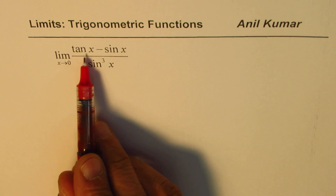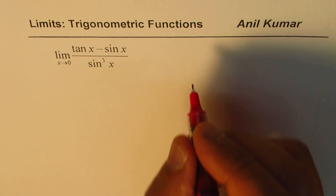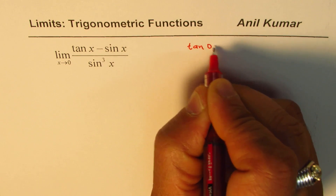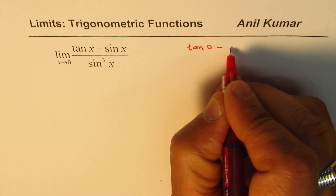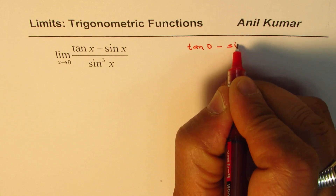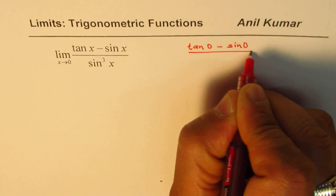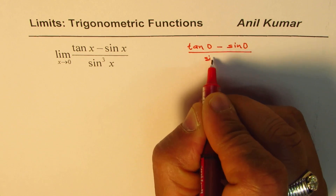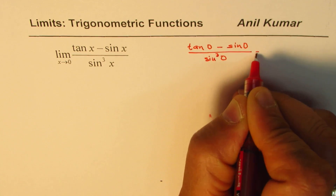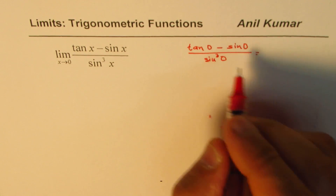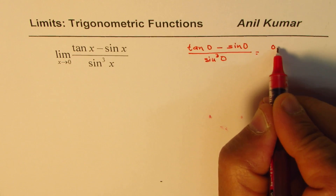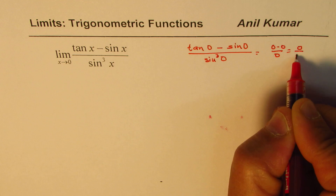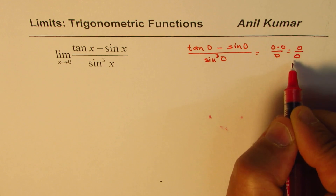If I substitute 0 for x, what do I get? I get tan 0 minus sin 0 divided by sin cube of 0, and that is 0 minus 0 over 0, which is in indeterminate form.